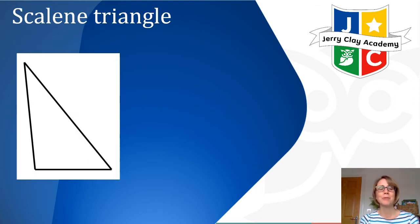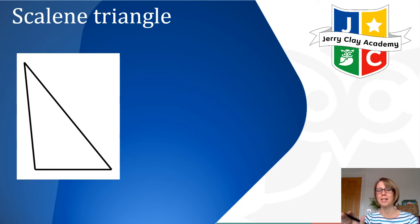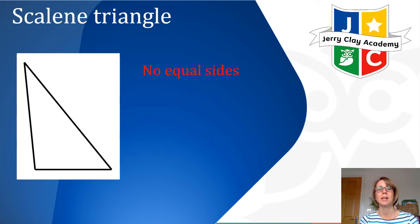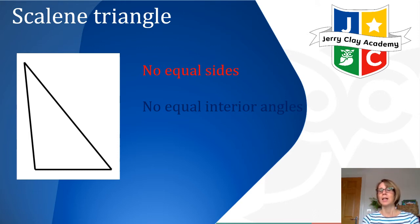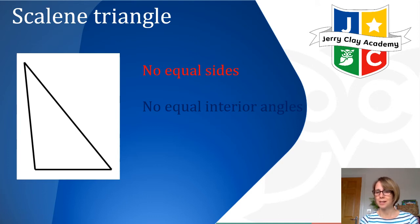The next type is a scalene triangle. Working backwards — equilateral had three sides the same, isosceles had two sides the same — a scalene triangle has no equal sides at all. No equal interior angles either; every angle inside is different. So: equilateral — three sides the same; isosceles — two sides the same; scalene — no sides the same.